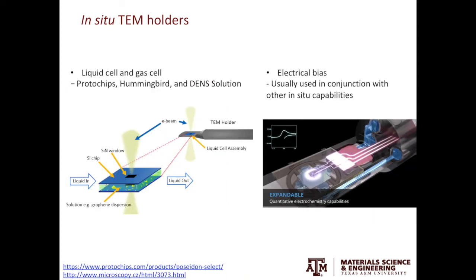You can also use the liquid cell or gas cell in TEM. The thickness of the cell is usually a few hundred nanometers. For the viewing windows, usually is made from the silicon nitride to ensure a good sealing and electron transparency. You then pass the liquid or gas in the cell to observe the chemical reaction in situ. You can also apply electrical bias on the specimen to measure the IV curve. The electrical bias holder is usually used in conjunction with other in-situ capabilities.